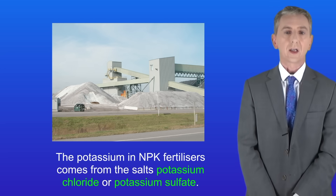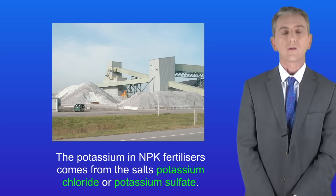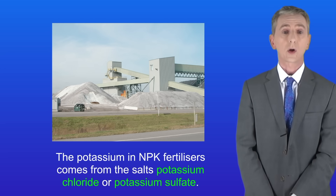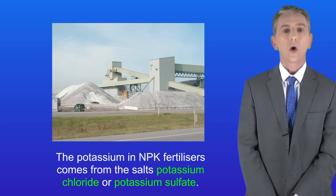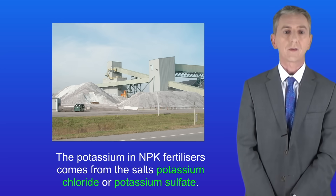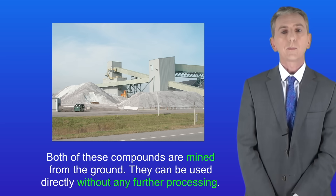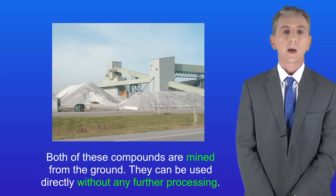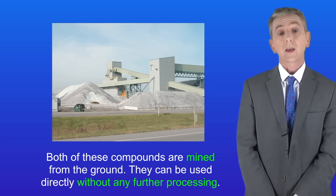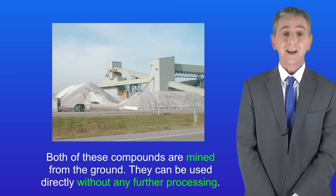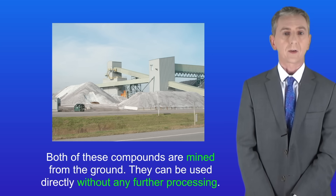The potassium in NPK fertilizers comes from the salts potassium chloride or potassium sulfate. Both of these compounds are mined from the ground and they can be used directly without any further processing.